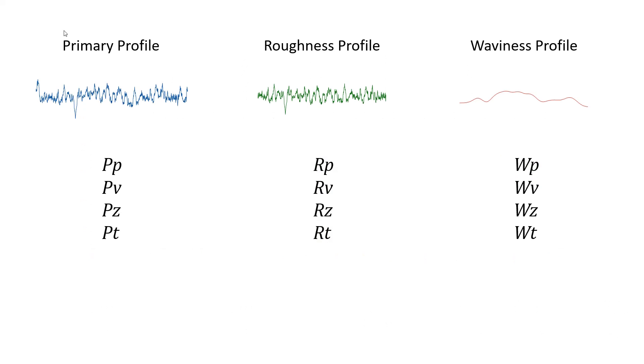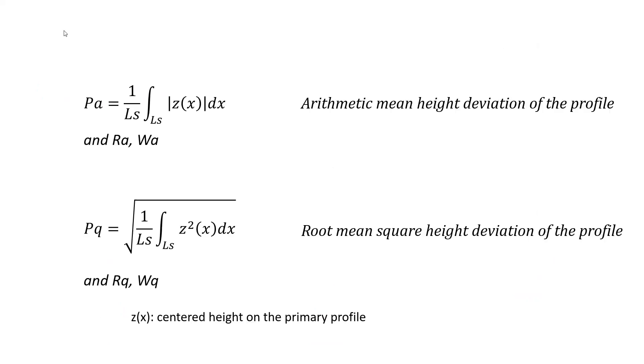We can add four more parameters: RA, RQ, RSK and RKU, also considered as amplitude parameters. PA and PQ are both calculated from a mean of all point heights on the primary profile. In case of a roughness profile, RA and RQ are calculated on each sampling length, then averaged. They are averages of averages.